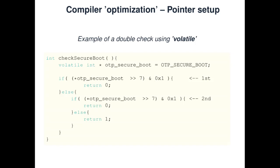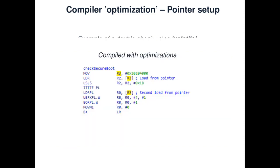Even if you use volatile, things can go wrong. In this example, we read a value from OTP, we've made that pointer volatile, and then we read from it twice — if both values are checked correctly, secure boot is disabled, otherwise it's enabled. Looking at the disassembly, we actually see two loads from that pointer. However, we only have a single point where the pointer is set up. So even here, a single fault could bypass secure boot.